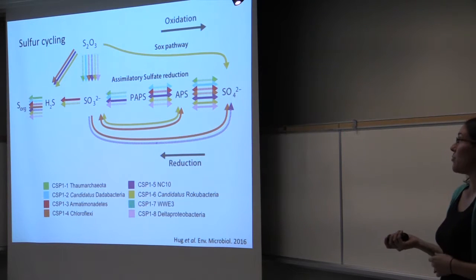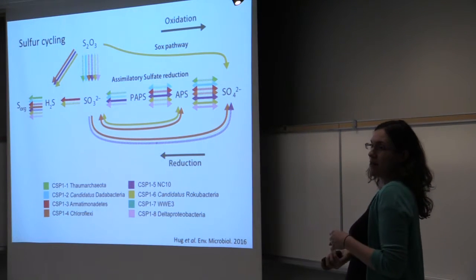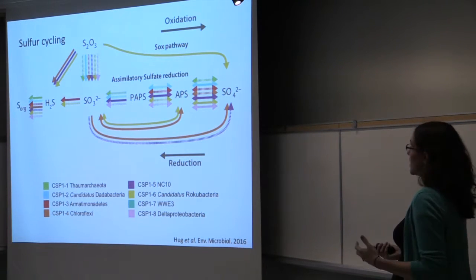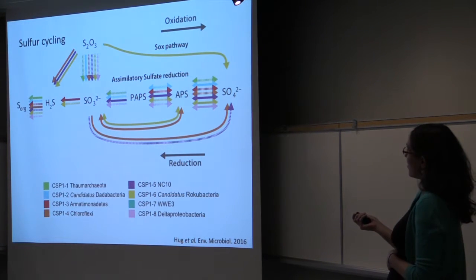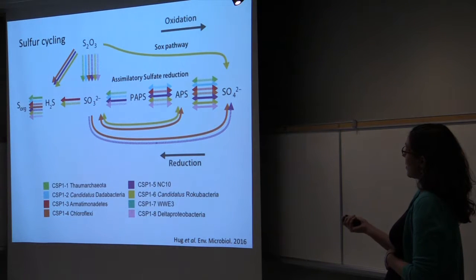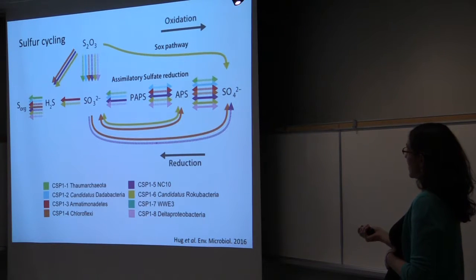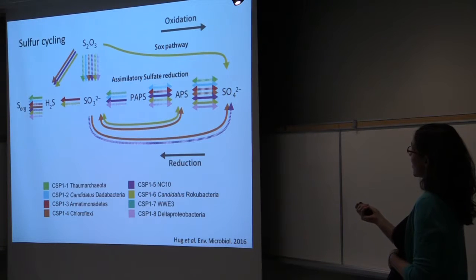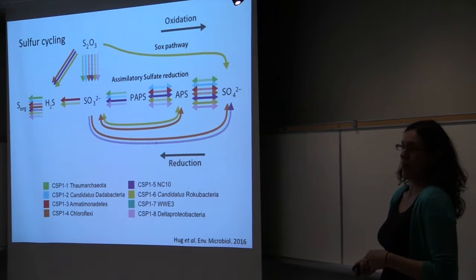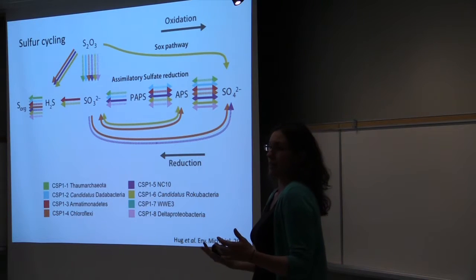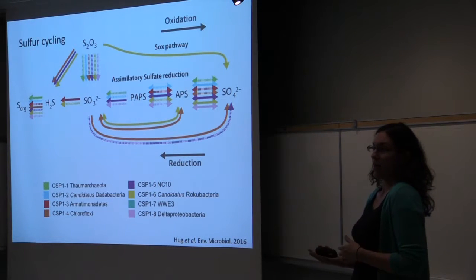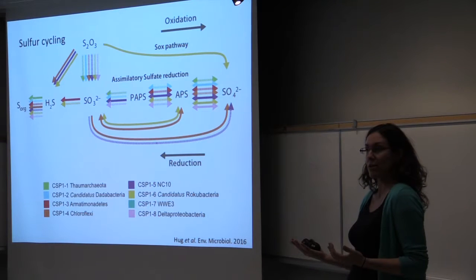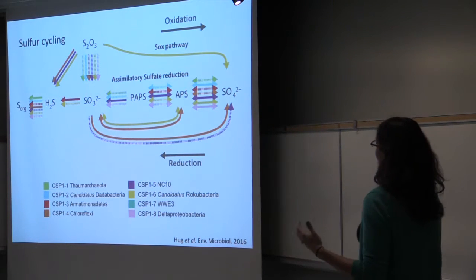A very similar story — if not more pronounced — in sulfur cycling. Again, solid arrows have protein data to back them up; dashed arrows are from genomic predictions. We see partial pathways — potential sulfur cycling but none of the final steps — and then the Rokubacteria specifically has both the SOX pathway for sulfur oxidation as well as the sulfate reduction pathway. We're not exactly clear why it would need that metabolic flexibility, but as a novel candidate phylum, it clearly plays a relatively important role in the sulfur cycle.